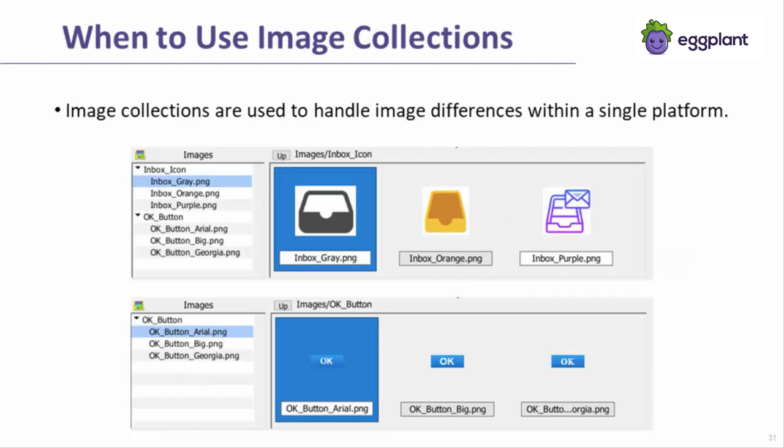As mentioned earlier, image collections are still a useful component of many frameworks. Sometimes there is UI element variation within a particular device or platform that needs to be accounted for. Image collections provide an easy and powerful method for handling these variations without having to change your code, and note how each image inside these example collections has a descriptive name.